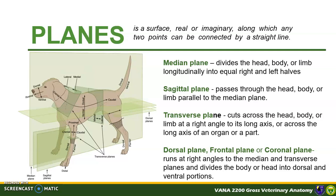The transverse plane cuts across the head, body, or limb at a right angle to its long axis, dividing the animal into cranial and caudal parts. The last is the dorsal, frontal, or sometimes called coronal plane. It runs at right angles to both the median and transverse planes and divides the body, head, or structure into dorsal and ventral parts. To remember, imagine a dog partially submerged in a flood: the part visually seen is the dorsal side, and the submerged part is the ventral side. The demarcation between the two sides is the imaginary frontal plane.